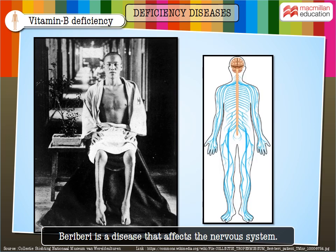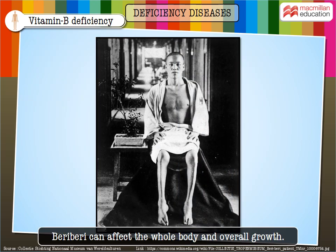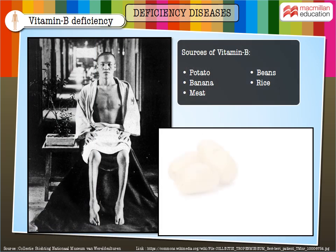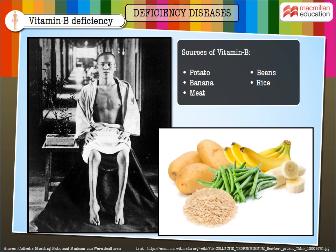Deficiency of vitamin B leads to beriberi. Beriberi is a disease that affects the nervous system and can affect the whole body and overall growth. Potatoes, beans, banana, unpolished rice, and meat are good sources of vitamin B.